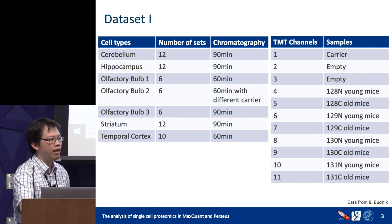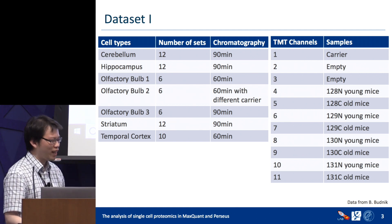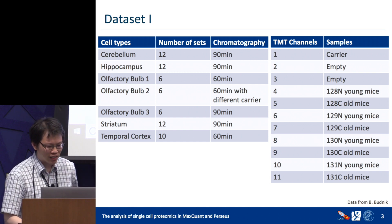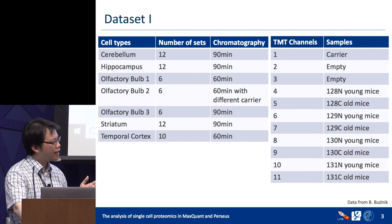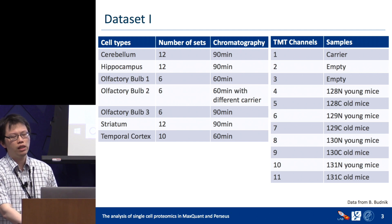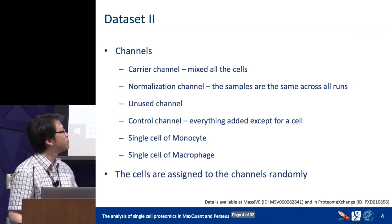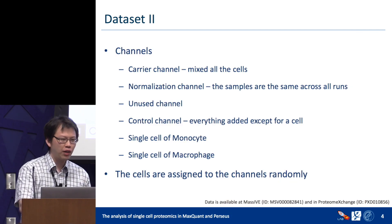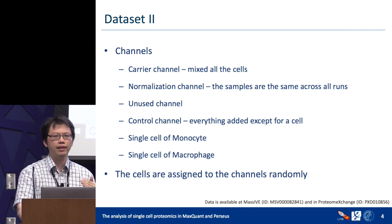Before I describe the methods, let me show you the datasets I will use. The first dataset is from Bogdan — it's composed of seven different samples from mouse brain with no reference channels, but it contains more cell types, which lets us test our dimensionality reduction method. The second dataset is composed of human macrophages and monocytes and contains normalization channels, so we can use it to test our normalization methods.